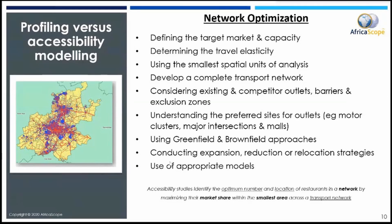One then has to look at what is the spatial unit of analysis — the development of the transport network. One has to consider where are my retail outlets, where are my competitor outlets, and are there any particular barriers in the marketplace that would influence my customers being able to get to this retail outlet? And then also, very importantly, what are the exclusion zones — in other words, industrial areas, high crime areas, conservation areas — that should be excluded and prevented from any sort of retail outlet being identified in those areas.